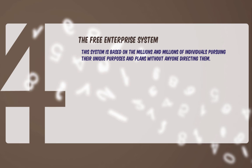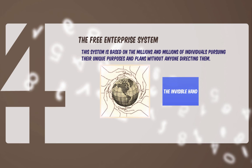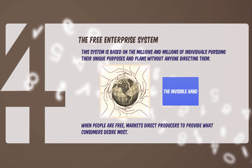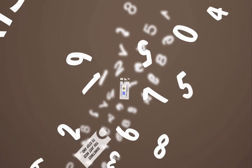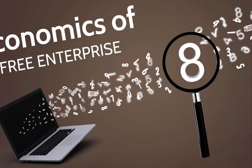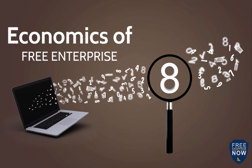Adam Smith called this the invisible hand. When people are free, markets direct producers to provide what consumers desire with the goods and services that are available. And collectively, the result is that these actions of individuals pursuing their own desires benefit society as a whole more than any individual or group such as government could do if they intentionally sought to fulfill everyone's needs or desires.